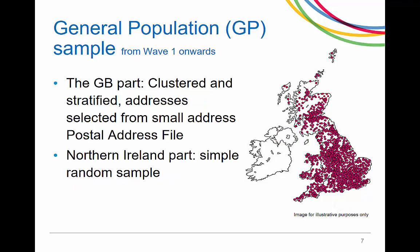The Great Britain part had a clustered and stratified design with addresses being chosen from the small address postal address file, and the Northern Ireland part had a simple random sample design.